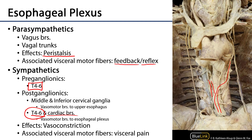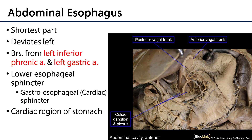The most distal part of the esophagus is the abdominal part, which is conducted through the esophageal hiatus. We can see that esophageal hiatus here, as well as the anterior vagal trunk and the posterior vagal trunk. That abdominal esophagus deviates to the left and empties into the cardiac region of the stomach, and is therefore sometimes referred to as the cardiac sphincter or the gastroesophageal sphincter.